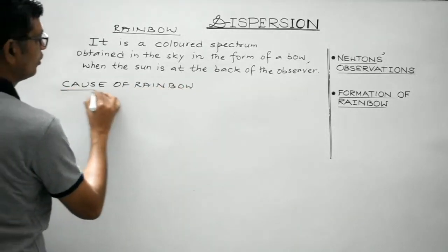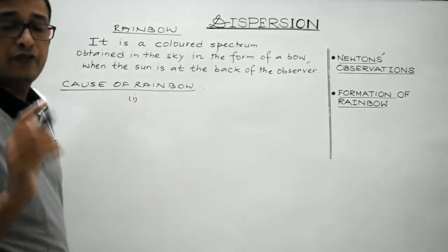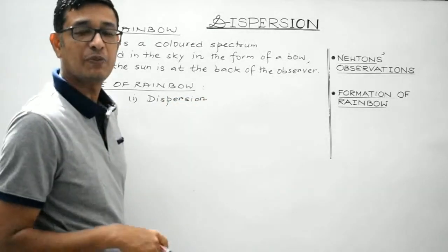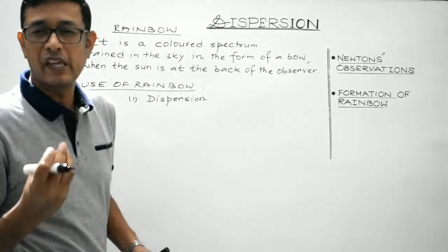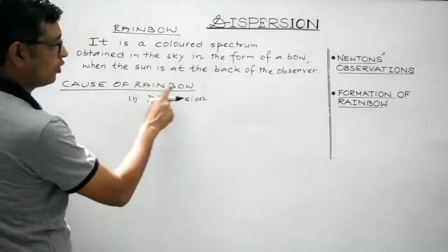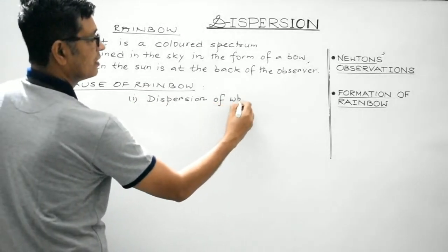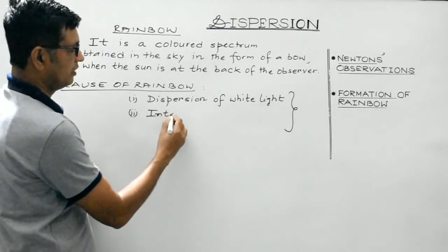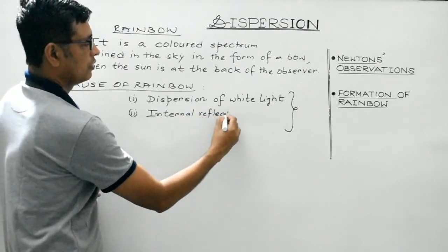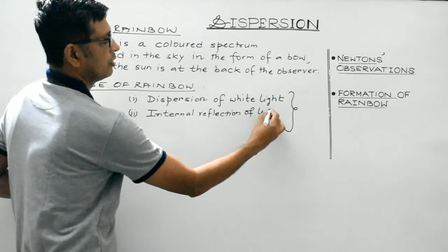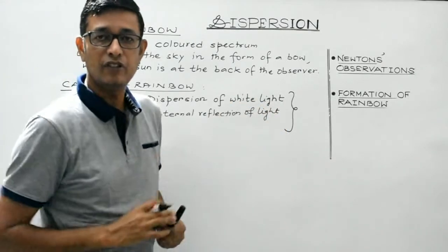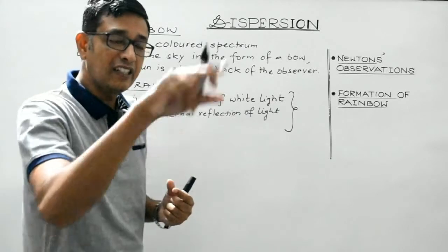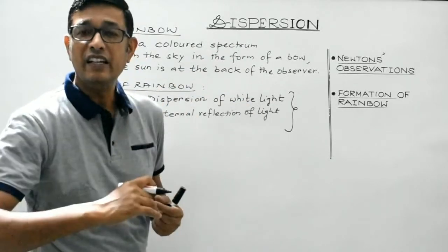Various phenomena are involved in the cause of rainbow. One of the phenomena involved is dispersion of sunlight from the water droplets suspended in the atmosphere — the water droplets behave as tiny prisms. One of the phenomena involved in the formation of rainbow is dispersion of white light or sunlight. The second cause is internal reflection of light. When light enters the water droplets, it gets internally reflected inside the droplets.